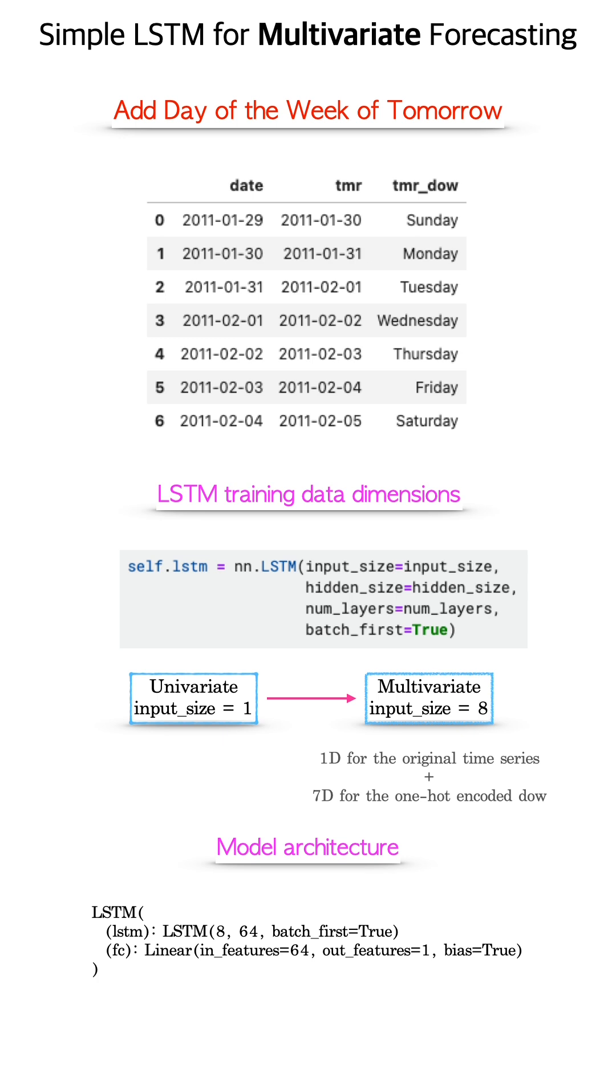Now, buying activity is different on different days of the week. Since we always know tomorrow's day of week, we can incorporate it into the model to enhance accuracy. This makes it a multivariate forecasting model.